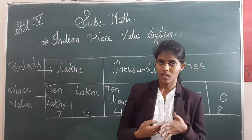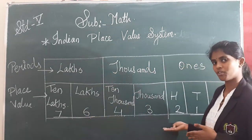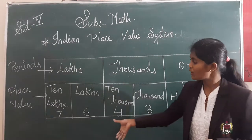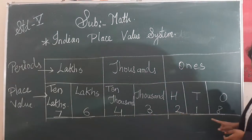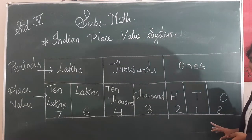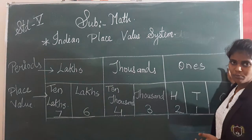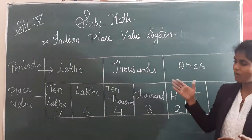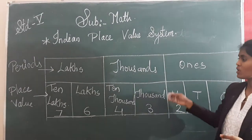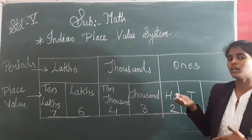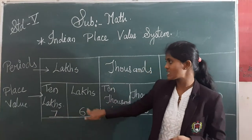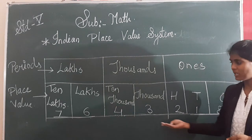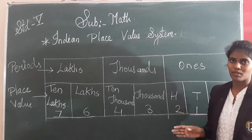What you are going to do is write the period and place value chart I have written on the board, and below that write numbers of your choice. For example, like I have written 76,43,218 here — you need to write numbers and their spellings. This is today's homework. Thank you, children.